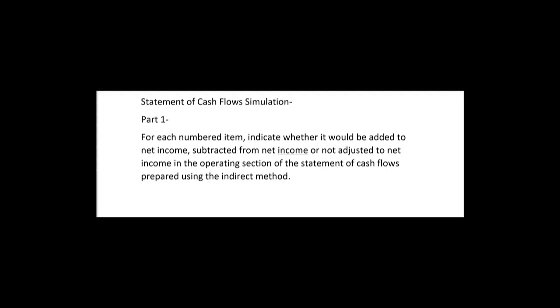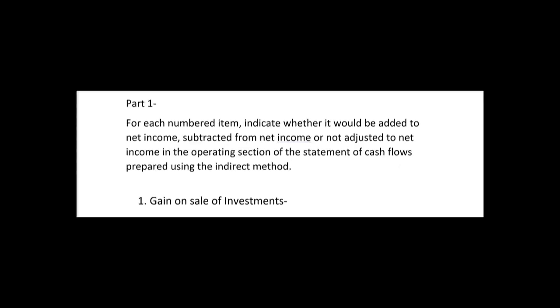Here's a SIM on the statement of cash flows, part one. For each numbered item, indicate whether it would be added to net income, subtracted from net income, or not adjusted to net income in the operating section of the statement of cash flows prepared using the indirect method. The indirect method starts with net income and then you either add back or subtract certain items to arrive at operating cash flows. Number one: gain on sale of investments — are we going to add that to net income, subtract it, or not adjust it at all?